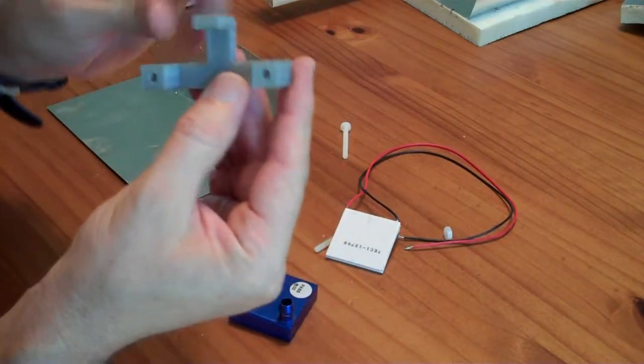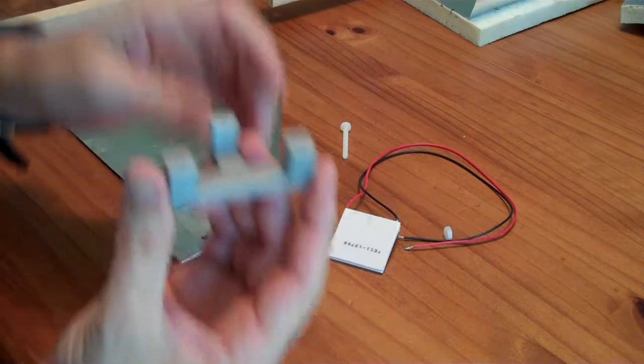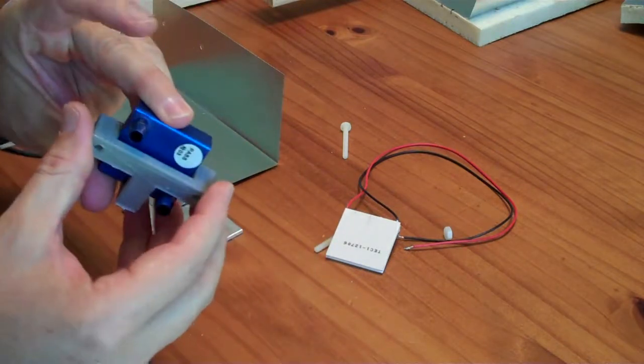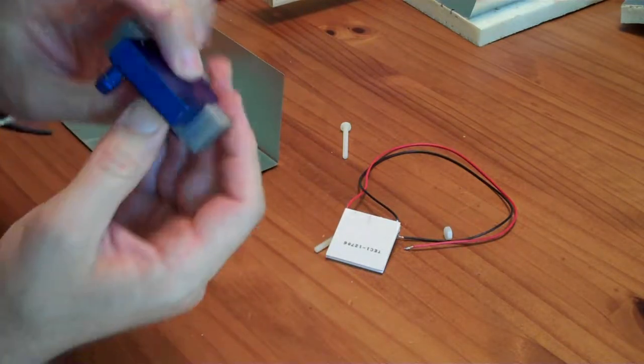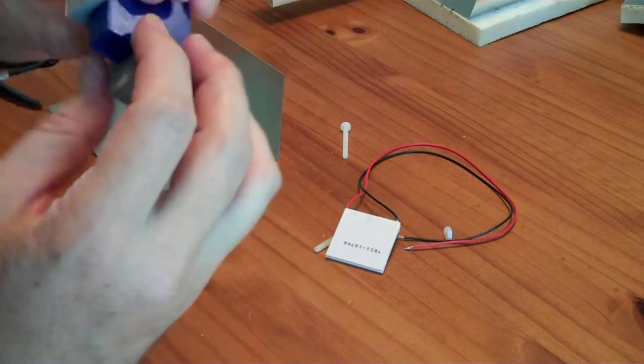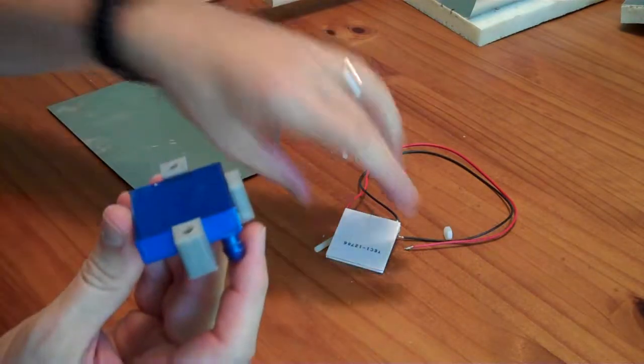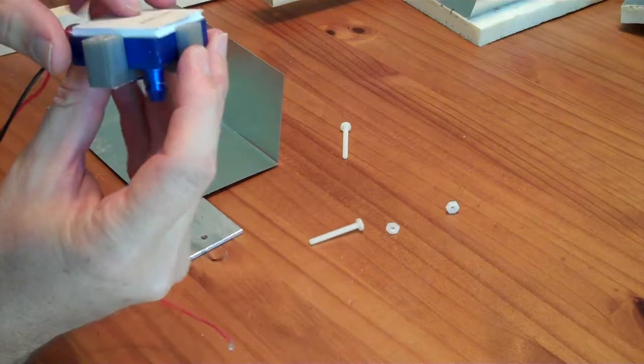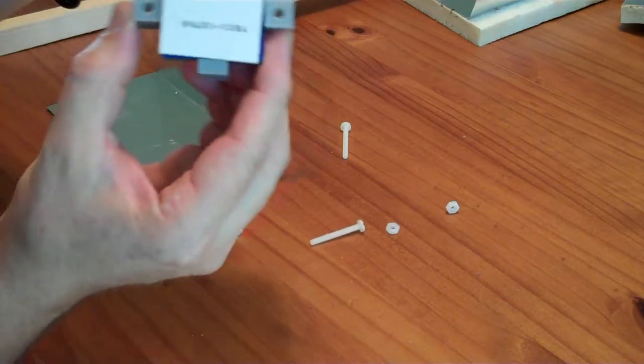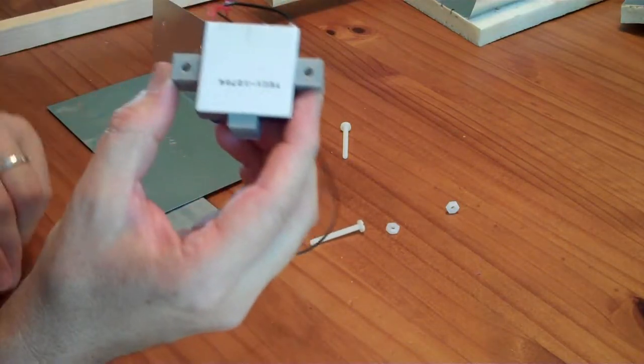Now the nice thing about the 3D printed mount is it has this bottom part here, and what that allows you to do is it sits just slightly proud of the water block so it can hold onto the thermal electric cooler. So it will hold the thermal electric cooler in place while you're positioning it.